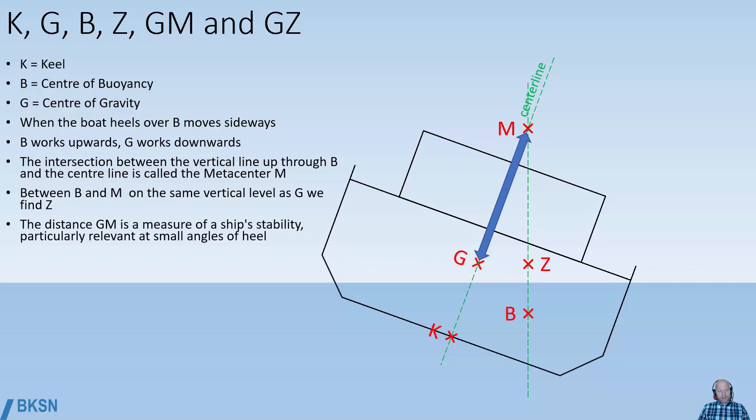The distance GM is a measure of a ship's stability, which is particularly relevant at small angles of heel, and it says something about the vessel's resistance to heel from an upright position.